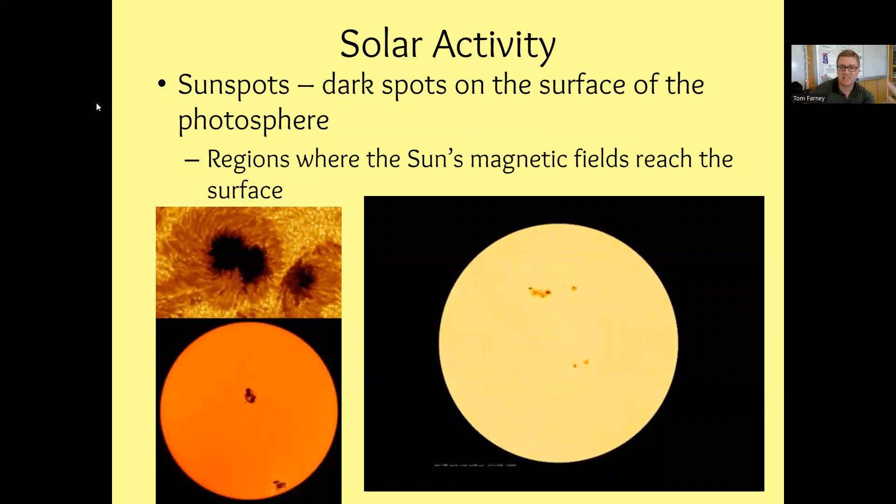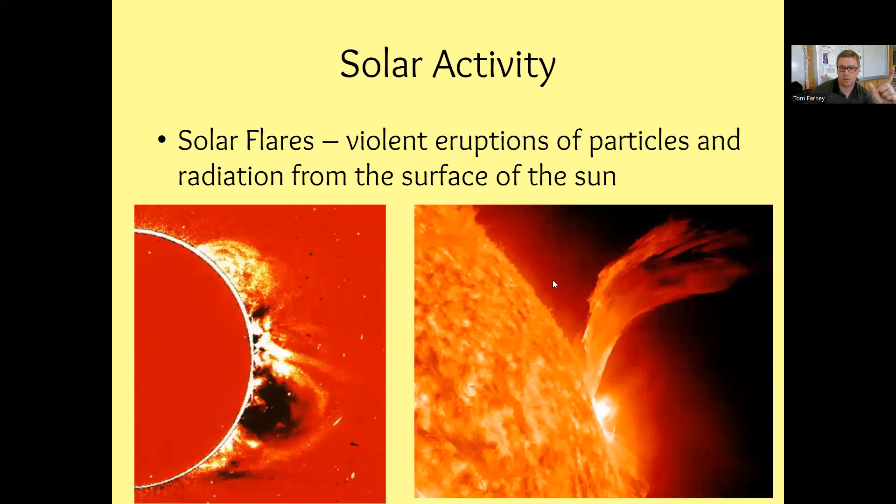Different types of activity that come along with it. We get sunspots. They're dark, cooler temperature spots on the surface of the photosphere. It's where regions of the sun's magnetic field will reach the surface. So those dark spots that we see there are actually cooler sections of the photosphere. That's what's going on there. Sometimes violent eruptions will happen on the surface of the sun. Violent particles kind of spew off and radiate from the surface of the sun.